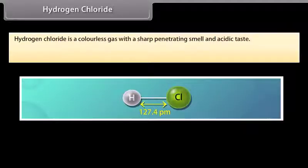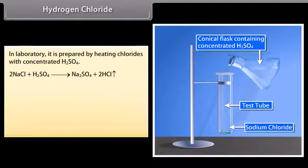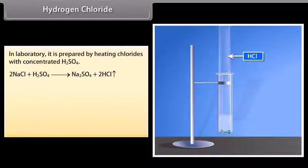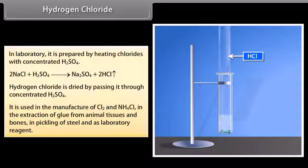Hydrogen chloride: In 1648, Glauber obtained hydrogen chloride by heating common salt with concentrated sulfuric acid. It is a colorless gas with a sharp penetrating smell and acidic taste. It is extremely soluble in water — one volume of water dissolves about 450 volumes of hydrogen chloride under ordinary conditions. It can be easily liquefied or frozen to a colorless solid. In the laboratory, it is prepared by heating chlorides with concentrated H₂SO₄, and dried by passing through concentrated H₂SO₄. It is used in the manufacture of Cl₂ and NH₄Cl, in extraction of glue from bones, pickling of steel, and as a laboratory reagent.